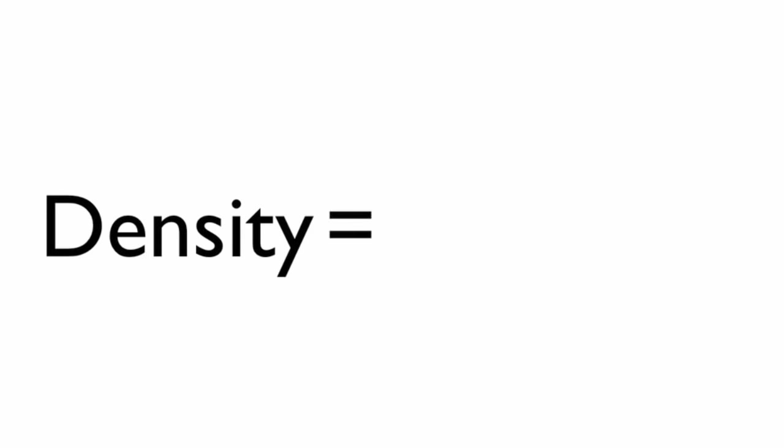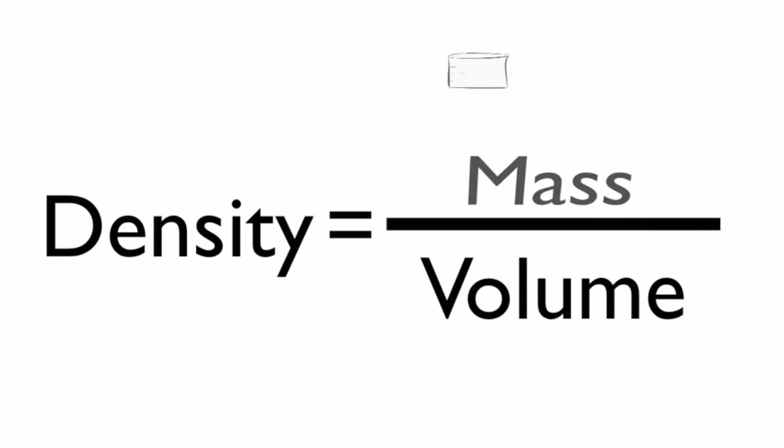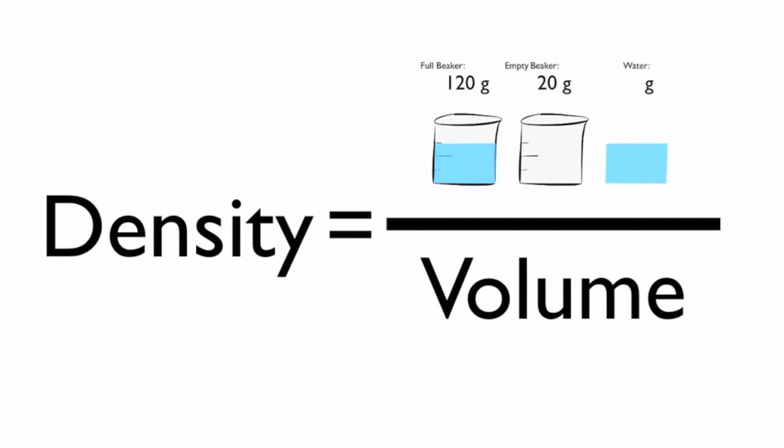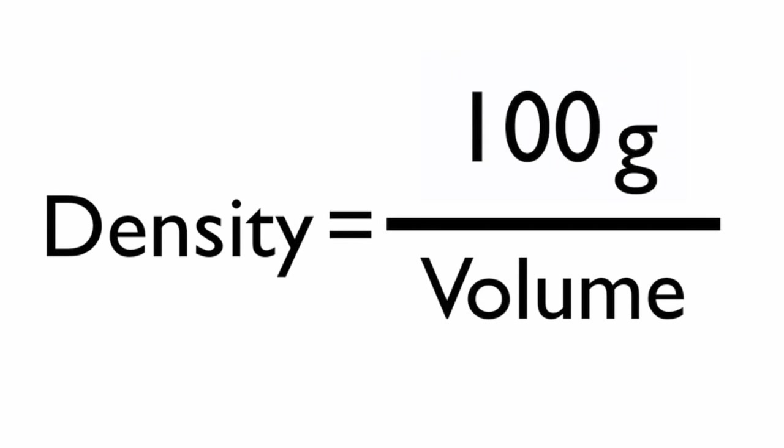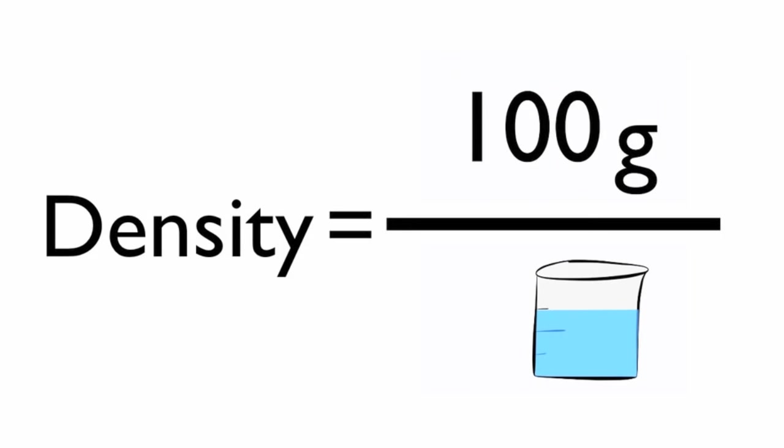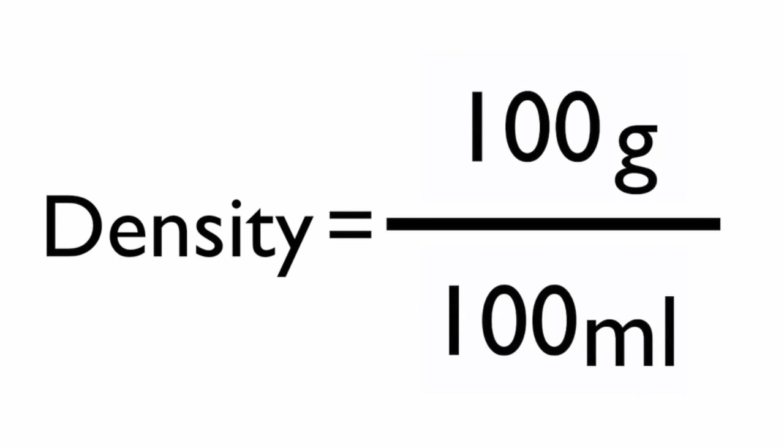Density is calculated by dividing the mass by the volume. Plug in your measured mass. We measured ours to be 100 grams. Divide that by the measured volume. Our volume was 100 milliliters.